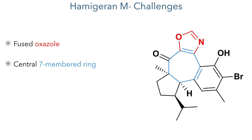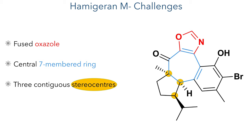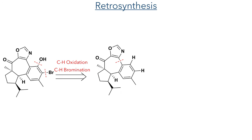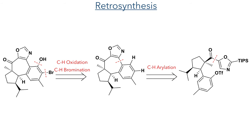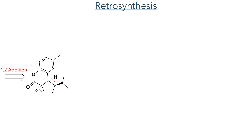There have been many synthetic studies into the construction of these molecules prompted by their unusual ring systems and oxidation patterns. In Hamigaran M, we can see this in the presence of the fused oxazole, which is a motif rarely seen in marine natural products. It also possesses a central seven-membered ring fused to three other rings and has three contiguous stereocentres. To functionalise the aromatic ring, they would use C-H functionalisation to install the oxygen and bromine groups.